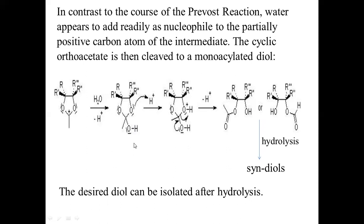The oxygen gets protonated, then the oxygen–hydrogen bond pair of electrons shifts and you get a carbon–oxygen double bond. This carbon–oxygen bond gets cleaved and you get a hydroxy group, giving a monoacylated diol. This monoacylated diol upon hydrolysis gives the syn-diol. Since the oxygens of the cyclic acetoxonium ion intermediate are retained in the monoacylated diol, the stereochemistry of the diol is syn. The syn-diol is obtained after hydrolysis. That is the syn-diol we get in Woodward's modification, or Woodward's dihydroxylation. Thank you.